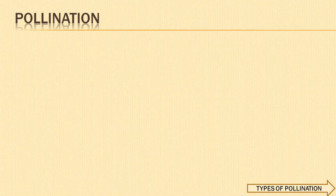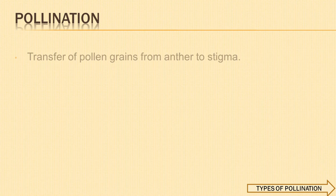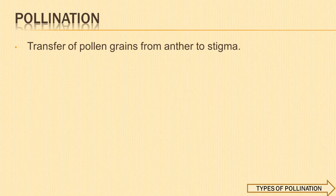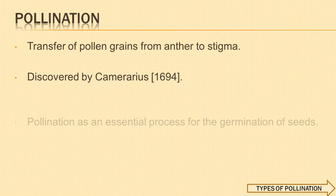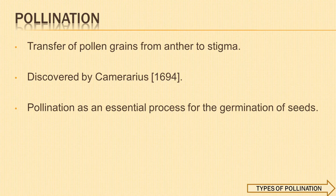Pollination is the transfer of pollen grains from the anther of a flower to the stigma of the same flower or of another flower of the same or different plant of the same species. The process of pollination was discovered by Camerarius in 1694. He described pollination as an essential process for the formation of seeds. Flowering plants or angiosperms produce seeds which carry the genetic information of the parent and develop into a new plant. For this to occur, pollination is a basic necessity.